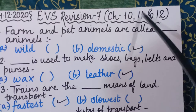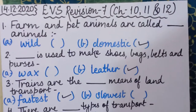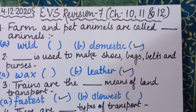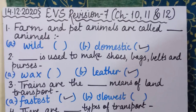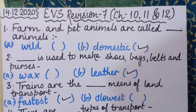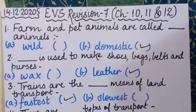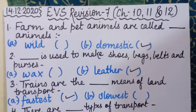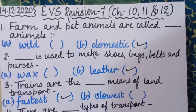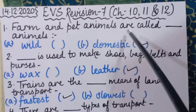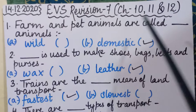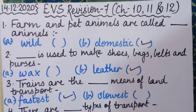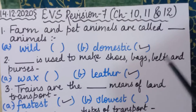We are going to do EVS Revision Number 7 of chapters 10, 11, and 12 — this will be a combined revision. In this I will explain it to you with answers, but when I give you the assignment, I will only give the question and the two options — I will not give you the answer.